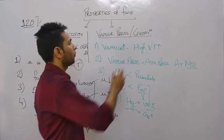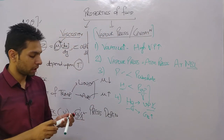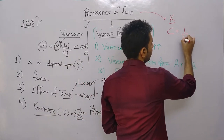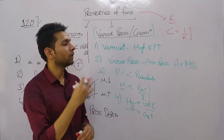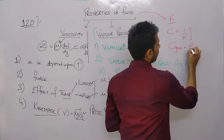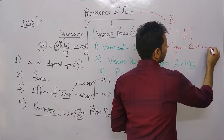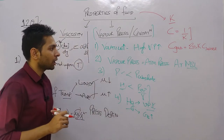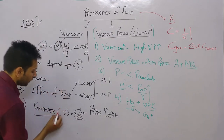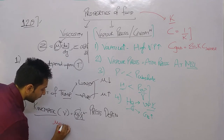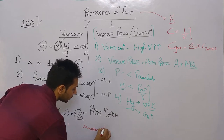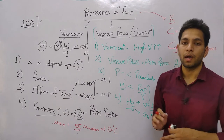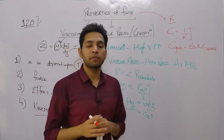The third property of fluid is bulk modulus of elasticity, denoted by K. Compressibility is defined as the inverse of bulk modulus of elasticity. The first question: compressibility of gas is around 20,000 times the compressibility of water. Next, remember the relation between viscosity of air and viscosity of water. At 20 degrees Celsius, the dynamic viscosity of water is about 55 times that of air.